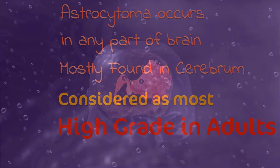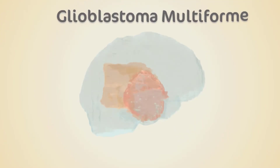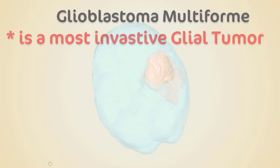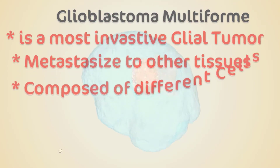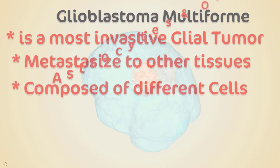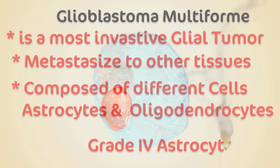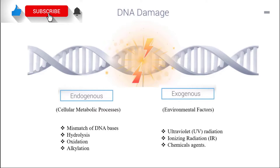Glioblastoma multiforme is the most invasive glial tumor because it spreads to other tissues. It is composed of different cells — astrocytes and oligodendrocytes. This provides context for astrocytoma before we jump to the mechanism of action of the drug.